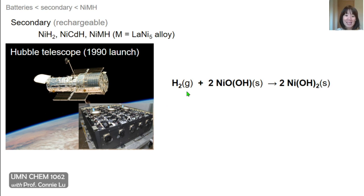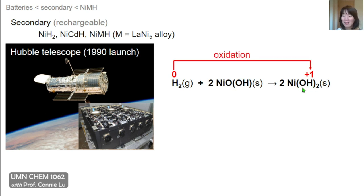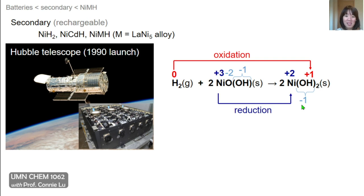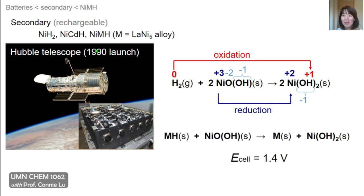The redox reaction run in nickel hydrogen batteries, like the one on the Hubble telescope, is shown on the right. If we follow the oxidation numbers, hydrogen has an oxidation number of zero but becomes +1 in the proton form on the hydroxide group, so this is the oxidation half reaction. On the other side, nickel changes from +3 to +2, so this is the reduction half reaction. The nickel metal hydride, which is far more popular, has a related redox reaction where instead of hydrogen gas, we use that alloy metal hydride. The second redox reaction has a good cell potential value of 1.4 volts.